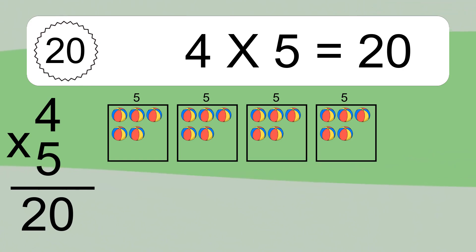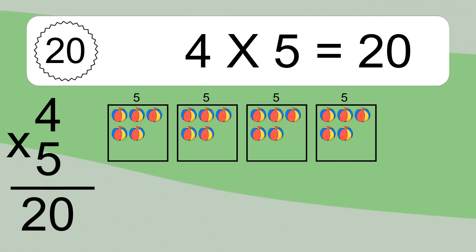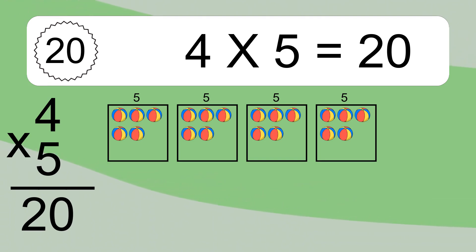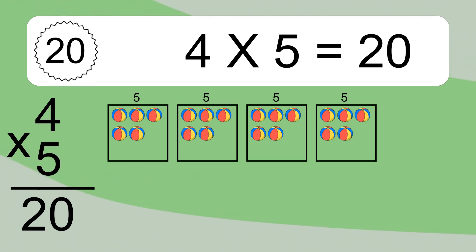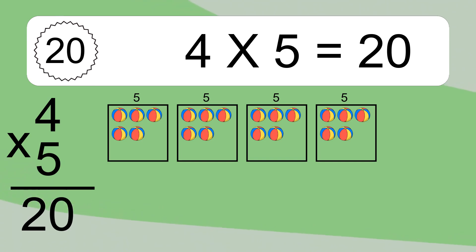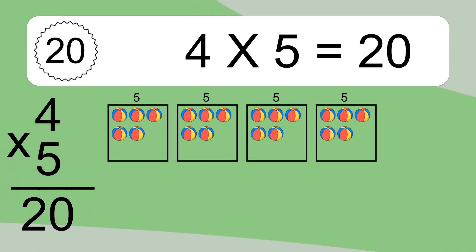We have 4 boxes, and each box has 5 colorful balls inside. If you count all the balls in all the boxes together, you will have 4 times 5 balls. This equals 20 balls.